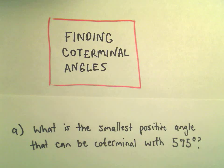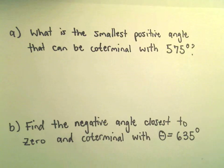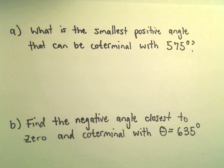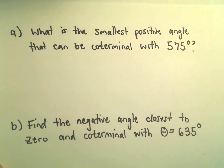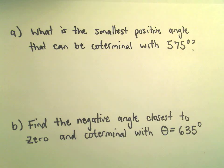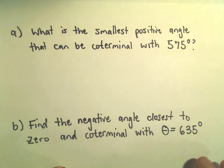Alright, so just two more last quick questions about finding coterminal angles. And in part A, we're going to find the smallest positive angle that's coterminal with 575 degrees.